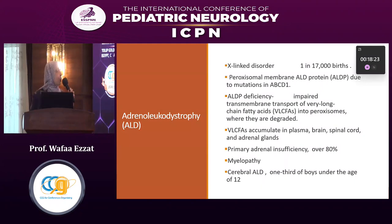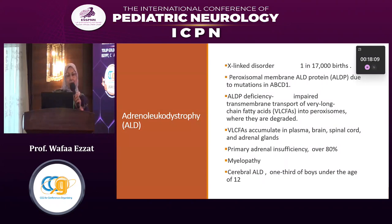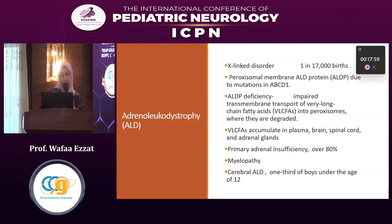This accumulation leads to variable presentations of the disease: primary adrenal insufficiency in more than 80% of cases, myelopathy — which is an adult onset disease — and the most devastating form, cerebral adrenal leukodystrophy, which occurs in childhood onset and represents one third of cases.